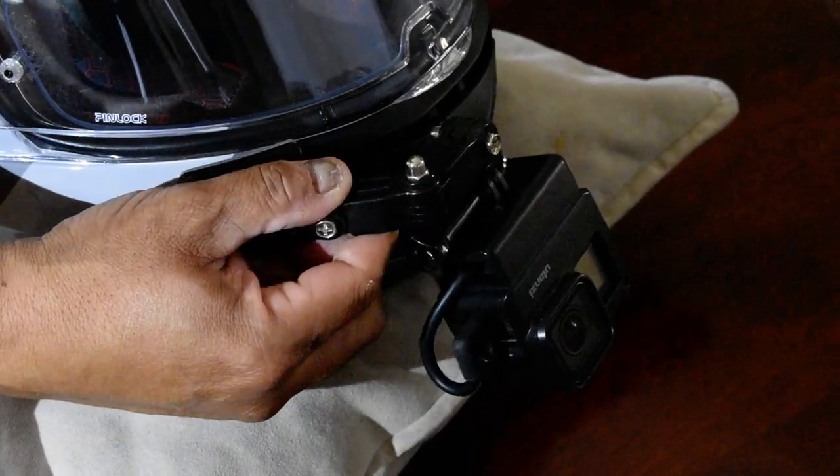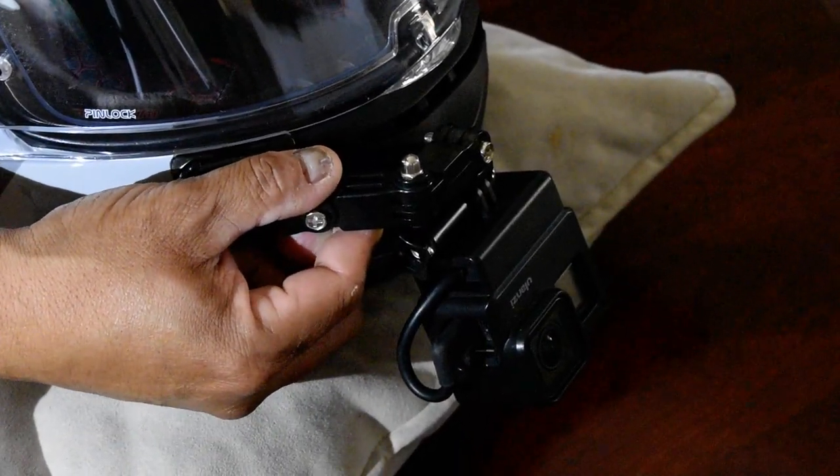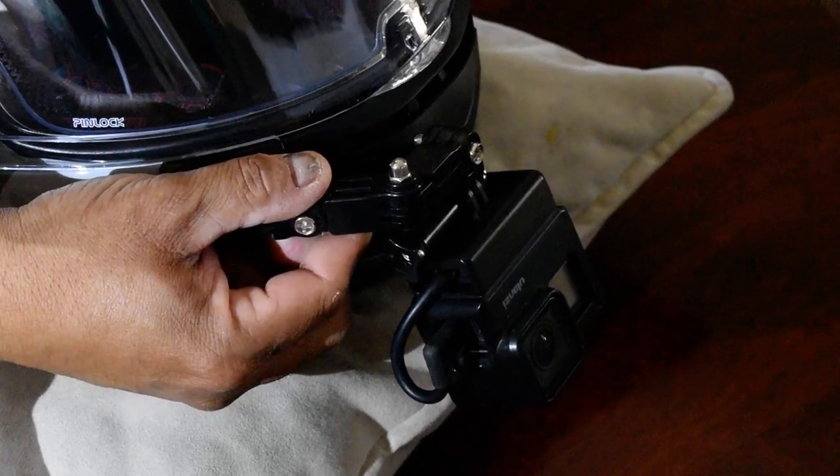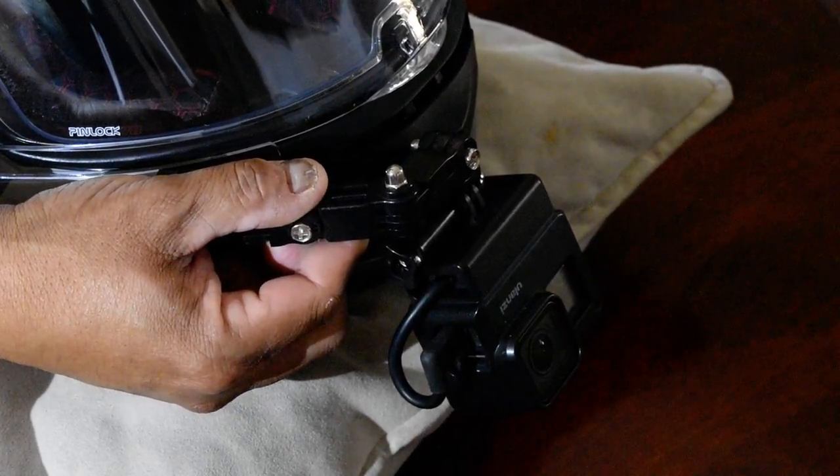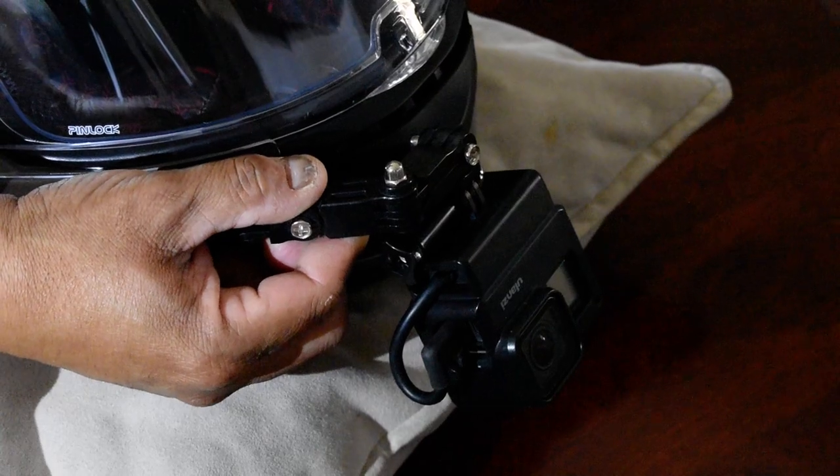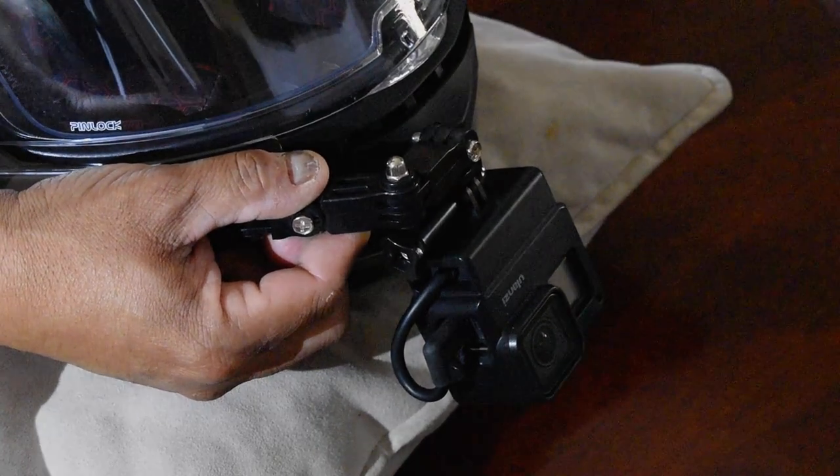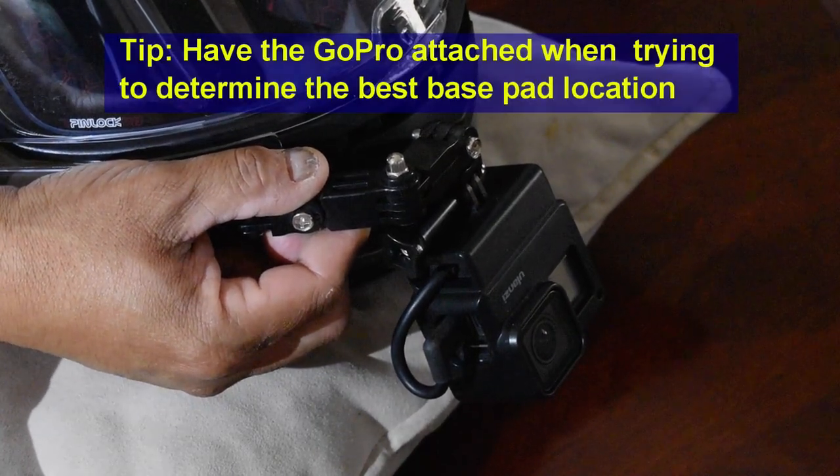So you've got to stick it on just over the seam, and that way you'll get the angle that you need for when the helmet is on your head, like this, upside down.